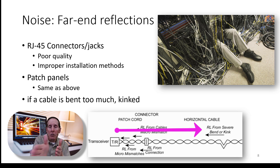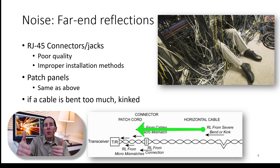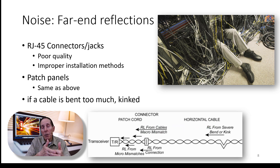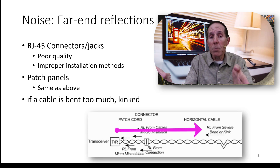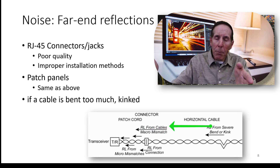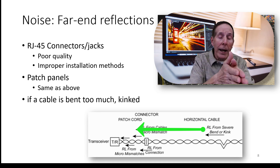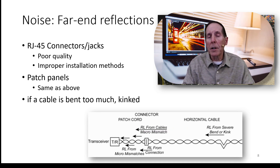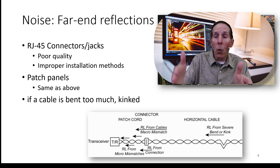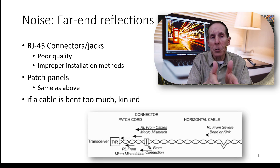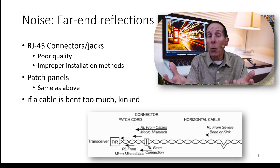If my network card is transmitting a frame to the switch port and somewhere down in the cable some of that energy is reflected back into the network card, it's going to impact the quality of the signal — it may even corrupt it. The difference between far-end reflection and near-end reflection is simple: one is further down in the cable, one is closer to the transmitter — your network card or your switch port.